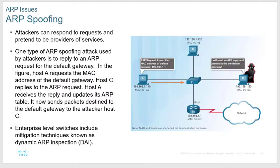ARP spoofing is a very dangerous man-in-the-middle attack. You poison the ARP tables, convincing the victim's PC that you are the router and convincing the router that you are the victim. All traffic goes through your PC — emails, internet traffic, everything — but from the victim's point of view nothing changes. You can then inspect or modify those packets. High-end enterprise switches have a mitigation technique called Dynamic ARP Inspection to help prevent this.